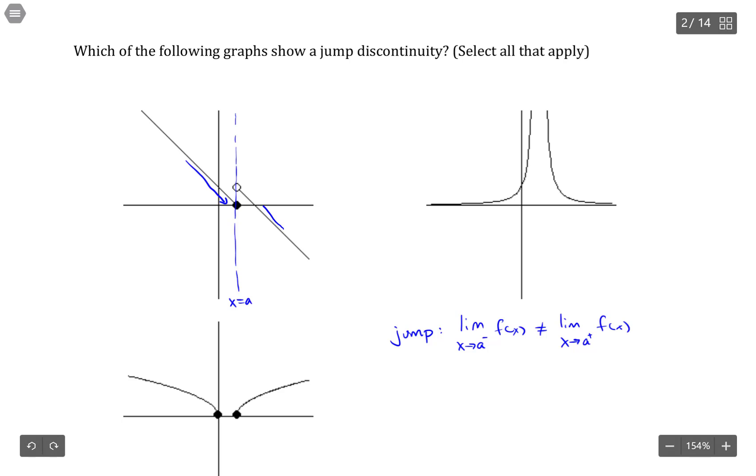From the right hand side, these y values are approaching something else. Maybe one, who knows, there's no scale to say. But regardless, they're not equal. So the limit from the left and the limit from the right are not equal, but they are finite. So you have this gap in between, and that's what we call a jump. So this particular graph does have a jump.